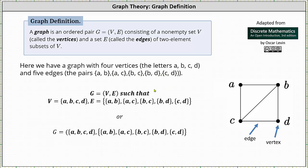We can denote the graph G in either of the two ways shown below, where we have G equals the ordered pair V comma E, such that V is a set of vertices and E is the set of edges. Or we can write G as an ordered pair where the first set is the set of vertices and the second set is the set of edges.